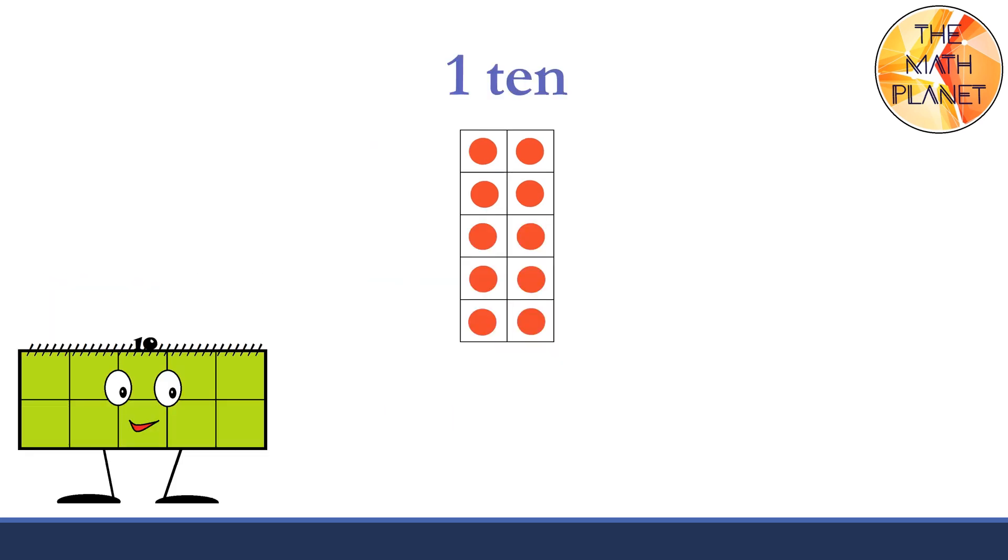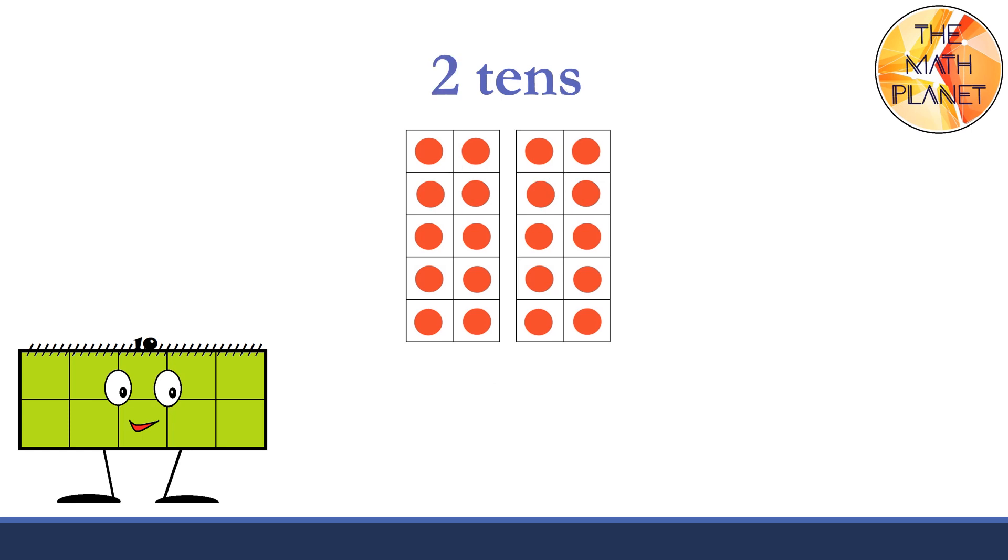One group of 10 equals 10. T-E-N, 10. Two groups of tens make 20. T-W-E-N-T-Y, 20.